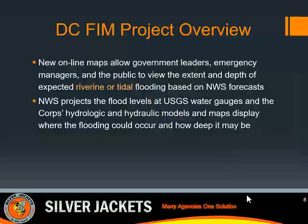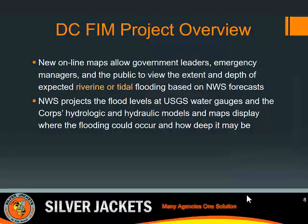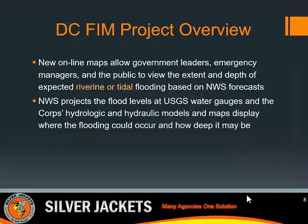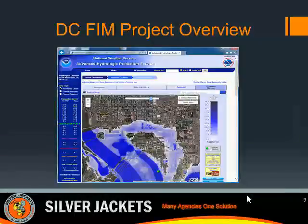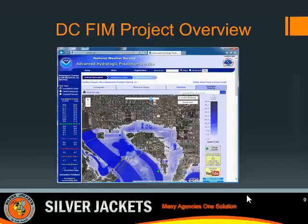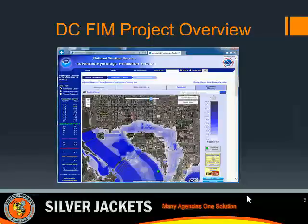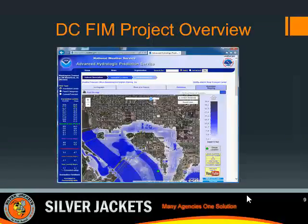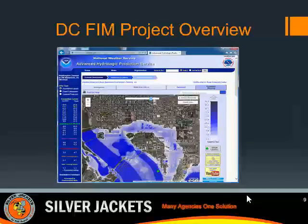Our team developed new online maps to display the extent and depth of expected flooding during riverine and tidal flooding — it does not include interior flooding. When the National Weather Service predicts flooding at the existing stream gauges, you'll be able to go online and view these maps developed from Corps of Engineers models. Here is a quick screenshot from one of the maps. When you click on the predicted flood stage on the left, it brings up a flood inundation map showing where it will flood and the depth of flooding, shaded by depth — one foot, two feet, et cetera.